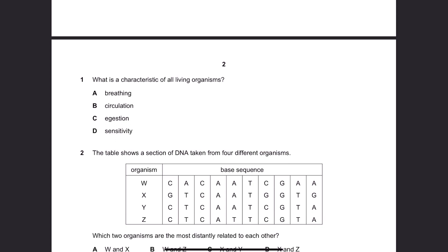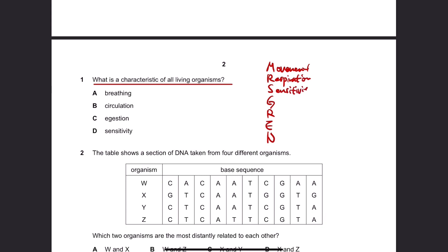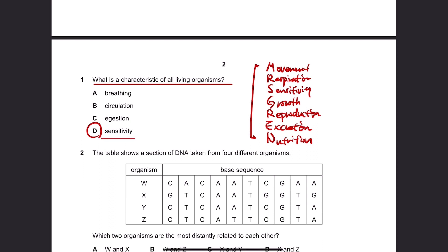Okay, number 1. What is a characteristic of all living organisms? This is an easy question. There are 7 characteristics of all living organisms: movement, respiration, sensitivity, growth, reproduction, excretion, and nutrition. So you just have to pick one that belongs to one of these 7 characteristics. The answer should be D — sensitivity.